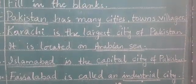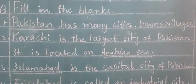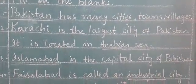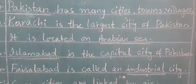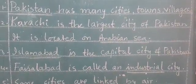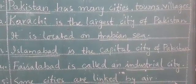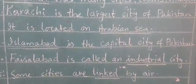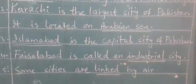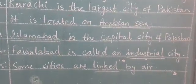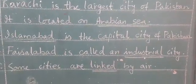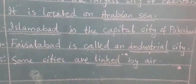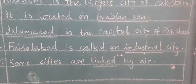I am going to repeat that. Pakistan has many cities, towns, villages — Pakistan is a blank. Karachi is the largest city of Pakistan, located on the Arabian Sea — Arabian Sea is a blank. Islamabad is the capital city of Pakistan — Islamabad is a blank. Faisalabad is called an industrial city — Industrial is a blank. Number 5: some cities are linked by air — Link is a blank.